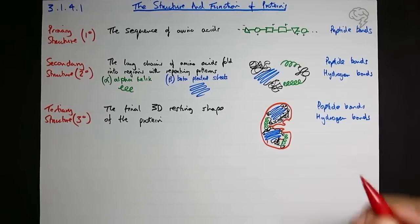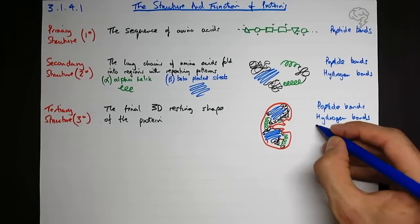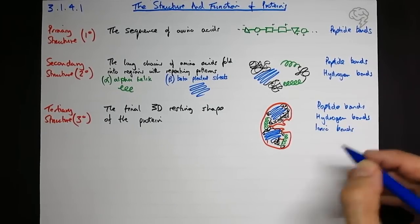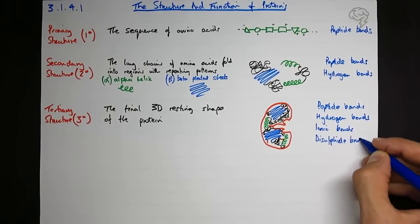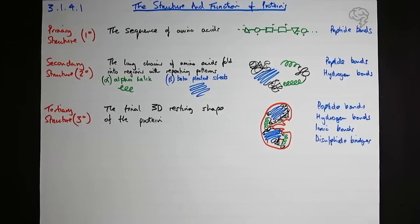So these bonds are proper bonds. We call them - we've got ionic bonds and we've got what's called disulfide bridges. So they bridge, they connect two different regions and they hold them solidly together.